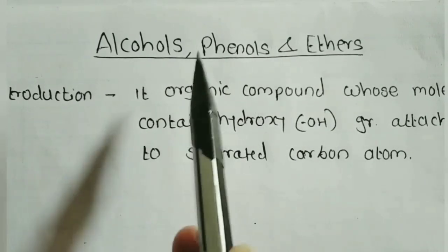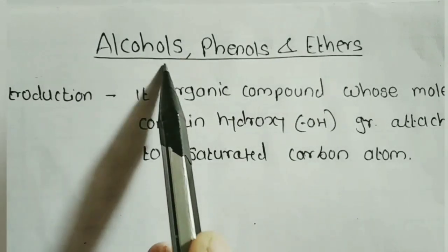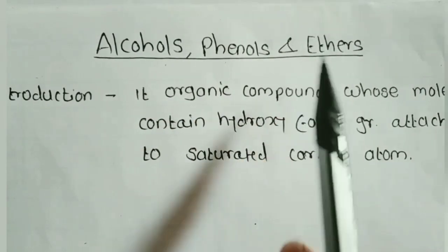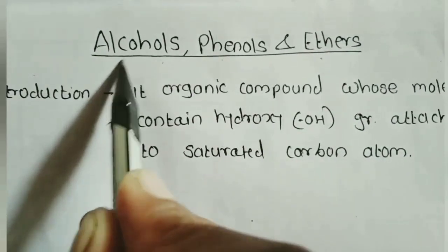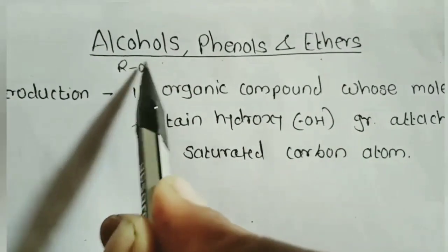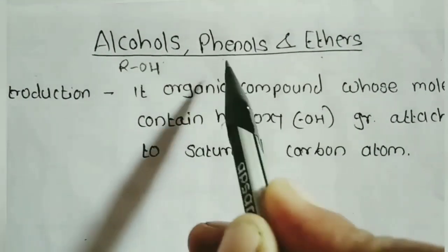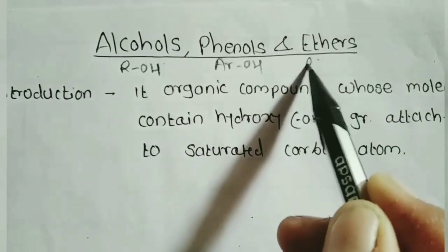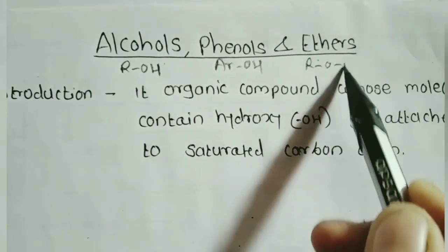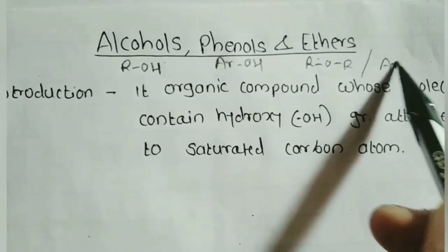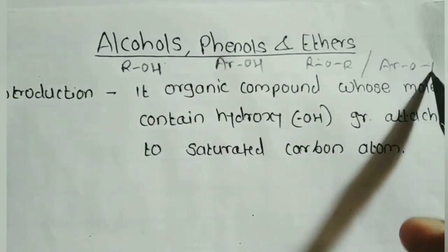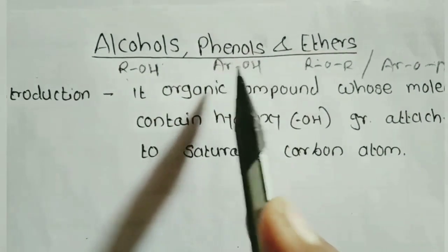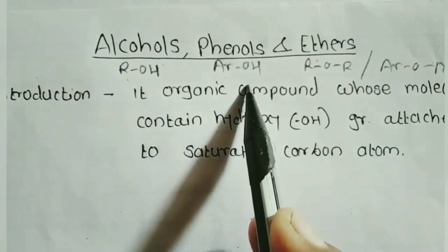Now going to start the chapter Alcohol, Phenols and Ethers. We know that the functional group of Alcohol is OH. The functional group of Phenols is ArOH, and Ethers are OR or ArR. Here, R means alkyl group and Ar means benzyl (aryl) group.